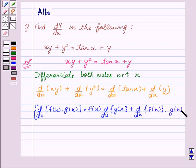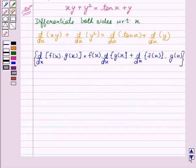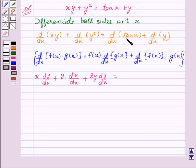Now we will apply this product rule in d/dx of xy. So this will give us x into dy by dx plus y into dx by dx plus d/dx of y squared is 2y into dy by dx equals d/dx of tan x.